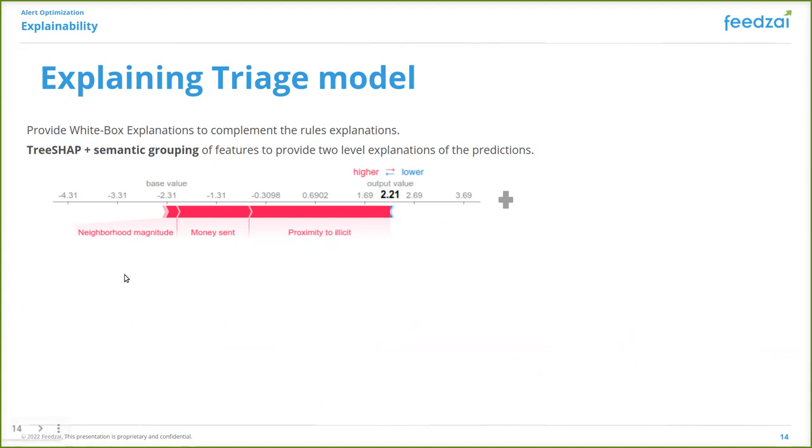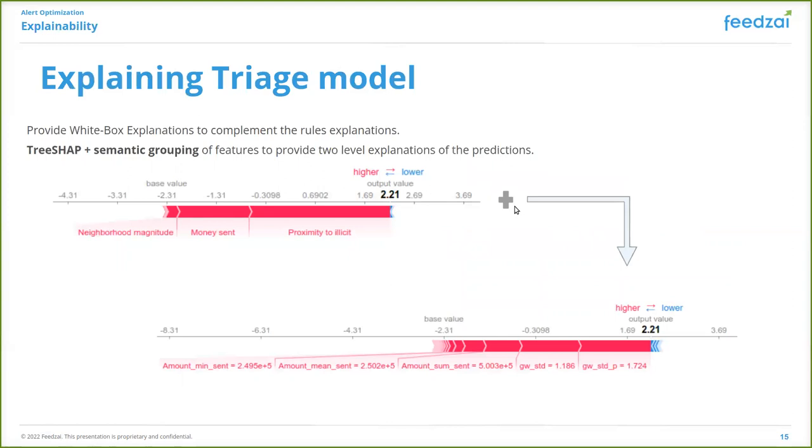This is an example of an alert that our model assigns a high probability of being suspicious. The semantically grouped explanations show that the reason of the high score was that the proximity to illicit nodes, the amounts of money that were being sent, and the size of the neighborhood. If the reviewer wants to see the exact features and their values, by clicking on the plus sign they will see the exact values behind the score.